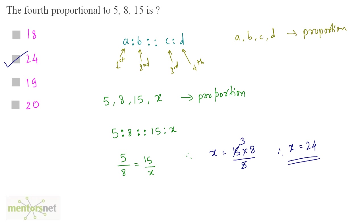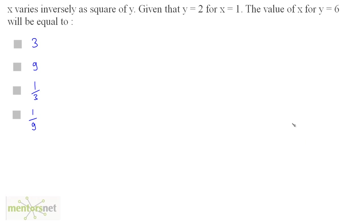Option B. Next problem: x varies inversely as square of y. Given that y is equal to 2 for x equal to 1, the value of x for y equal to 6 will be equal to — so you have to find the value of x when y is equal to 6.